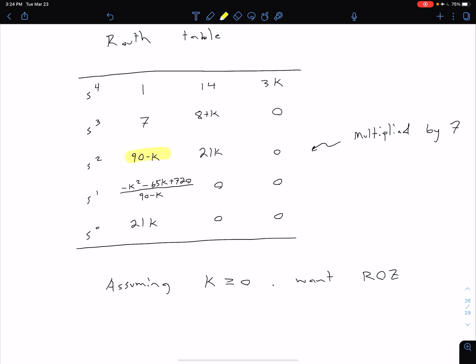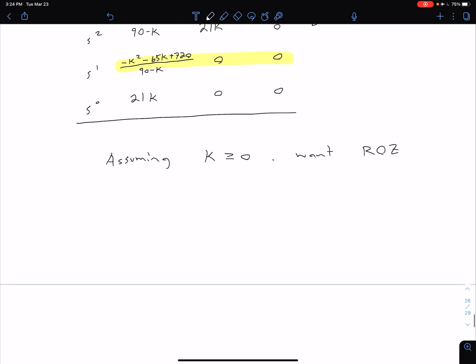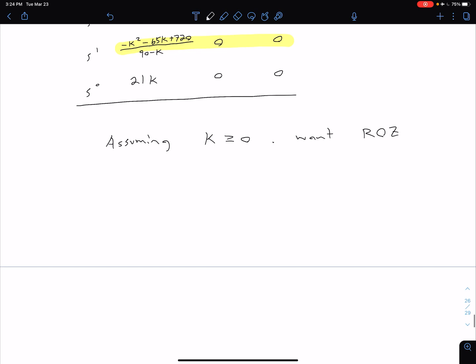We have two contenders left. We have this row here where we could have that gain of zero for our 21K. But if we have a zero gain, then we have 90 here, so we can't satisfy, we can't make both of those zero at the same time. What we want to focus on then is this row here. We're going to set that first term equal to zero and solve. We have negative K squared minus 65K plus 720 is equal to zero.